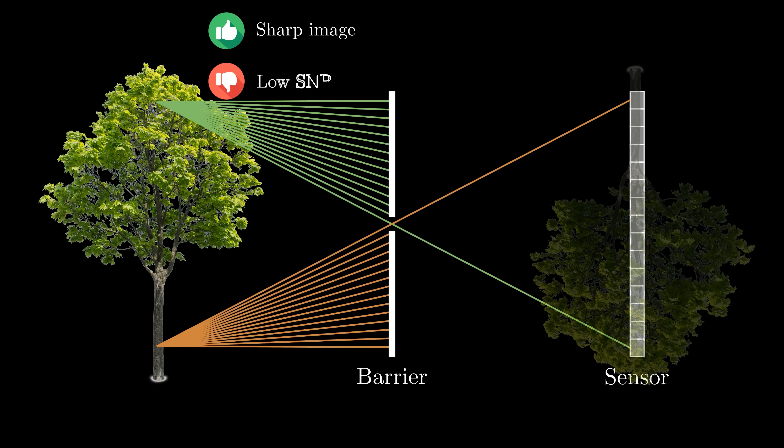But why is this image so dark? Well, since the barrier blocks most of the light rays and only lets a tiny fraction through, much less light reaches the sensor. This means that we have very low signal-to-noise ratio. Achieving a properly exposed image would require an extremely long exposure time. How about increasing the size of the hole and let more light through?